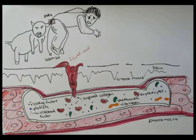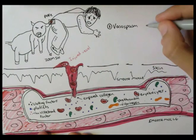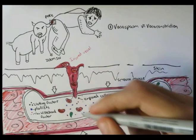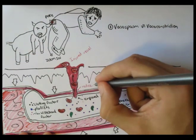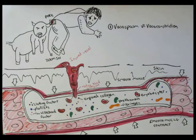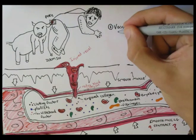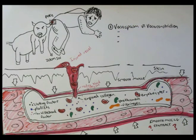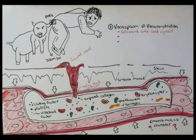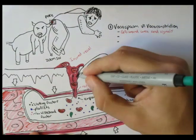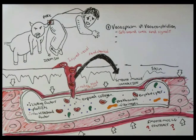What firstly happens in hemostasis is vasoconstriction or vasospasm. The blood vessels have to contract in order to save blood from gushing out and being wasted. But how do the blood vessels know when to contract? Well, there are three main ways. First, cells around the injured area, especially the endothelial cells, begin secreting chemicals which tell the smooth muscles to contract, enhancing vasoconstriction.